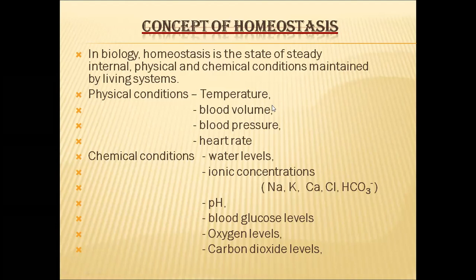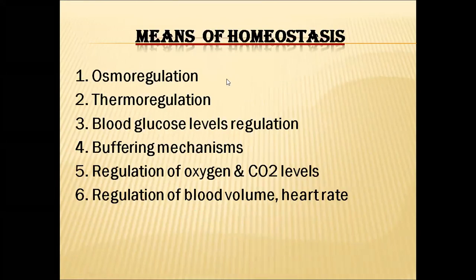Physical conditions include temperature, blood value, blood pressure, heart rate, etc. Chemical conditions include water levels in body fluids, ionic concentrations, pH, blood glucose levels, oxygen levels and carbon dioxide levels. All these values have a normal range which must be maintained in our body to be healthy. If the normal range is not maintained, that will cause many problems. Maintaining those normal levels is called homeostasis.